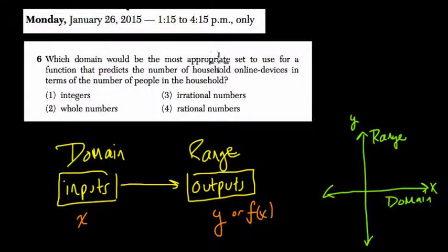Here they're saying, what domain would be appropriate for a function? A function is a relationship where every input has one output. Predicts the number of household online devices in terms of the number of people in the household. Look at the phrasing here. What we're saying predicts the number of household online devices in terms of. In terms of means based on.